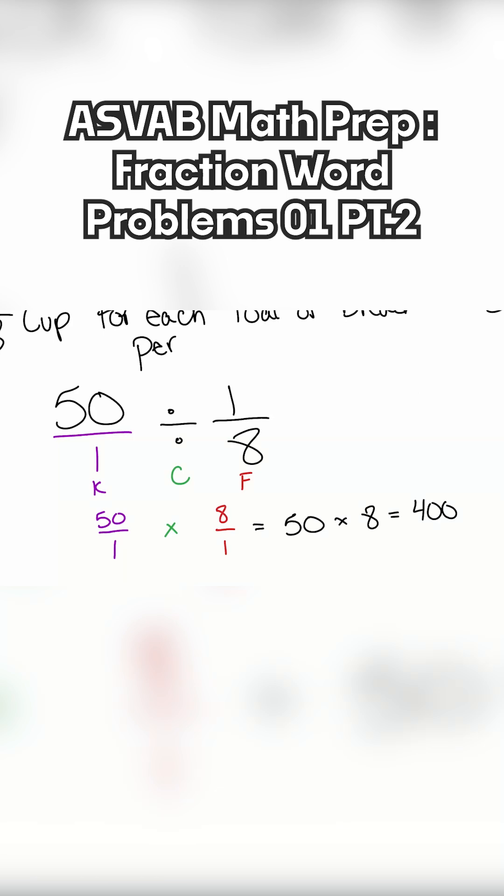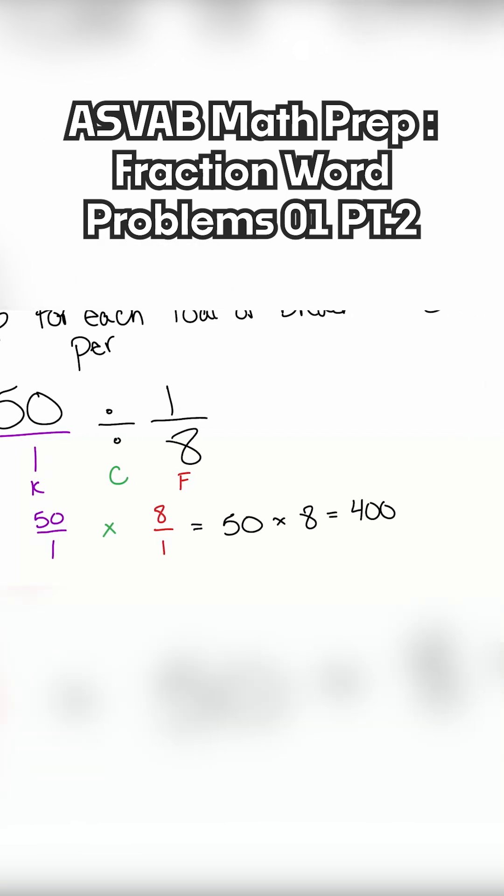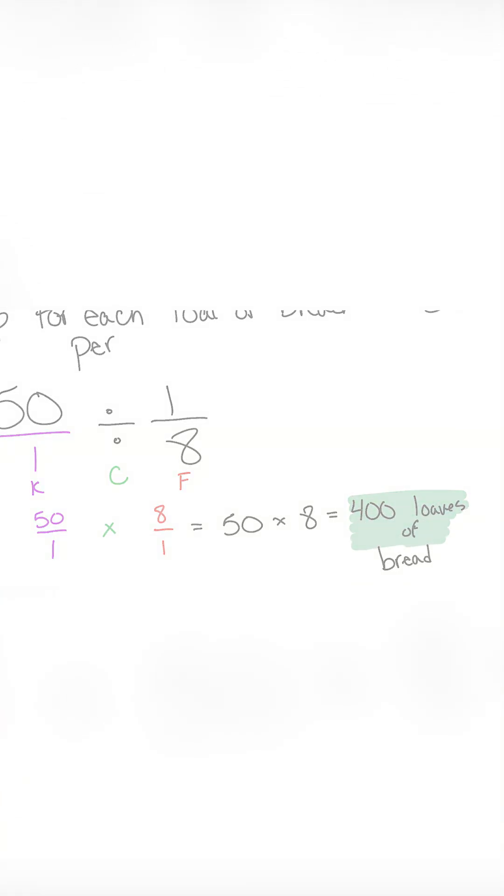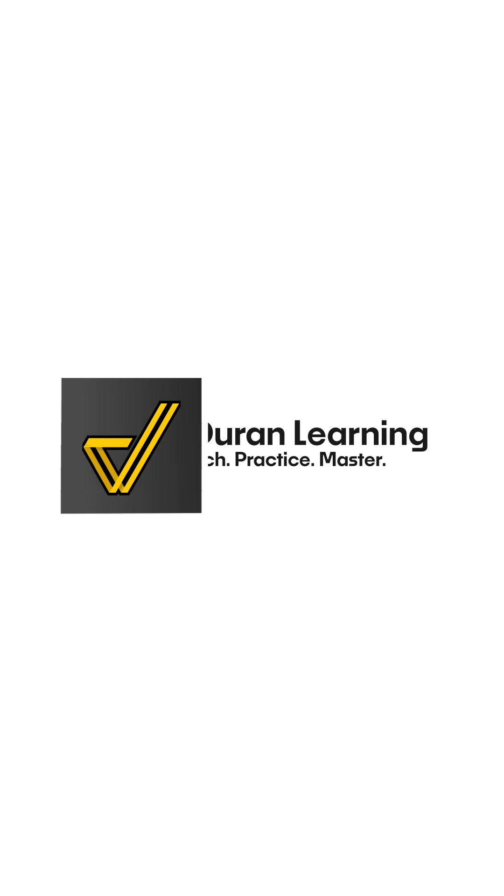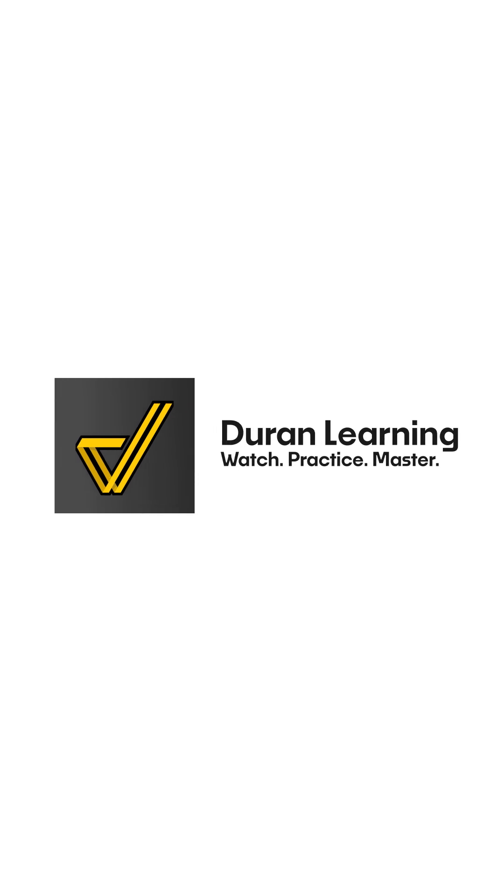And there we go. We can make 400 loaves of bread. And there we are. There's our correct answer. 400 loaves of bread is what our baker here can make.